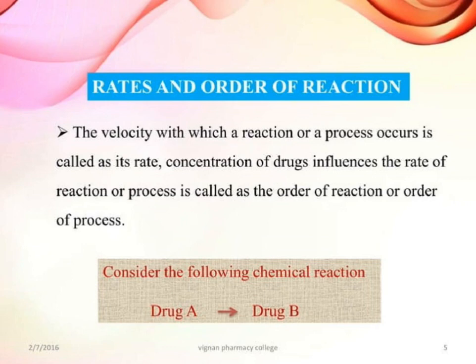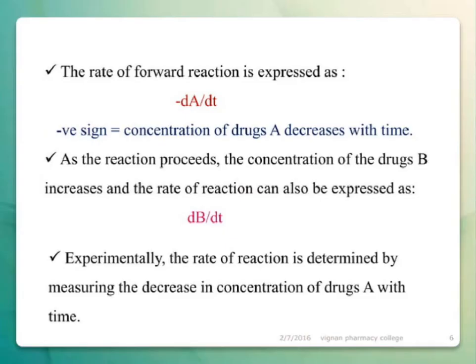Rates and order of reaction: the velocity with which a reaction or a process occurs is called its rate. The concentration of drugs that influences the rate of reaction or process is called the order of reaction or order of process. The rate of forward reaction is expressed as dA/dt.